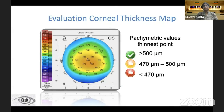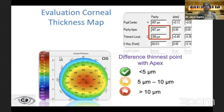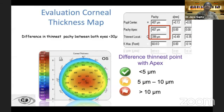Most refractive surgeons would start by looking at the pachymetry maps. A value less than 420 microns needs further analysis. We also look at the difference between the thinnest point and the apex — anything greater than 10 microns is a red flag. The difference in thinnest pachymetry between the two eyes should be less than 30 microns; anything beyond that also needs further analysis.